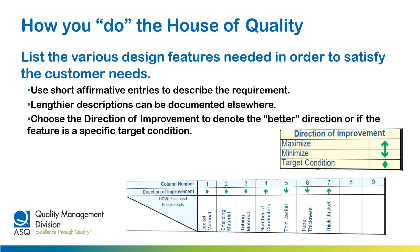Once you have the customer needs listed and ranked, you move on to list in columns the product or service features needed to satisfy those requirements. As with the customer requirements listed at the right, just a brief description is all that is needed here. Also, the tool helps you indicate the direction of improvement on each feature to show which way is better, or if the feature has a specific target condition.